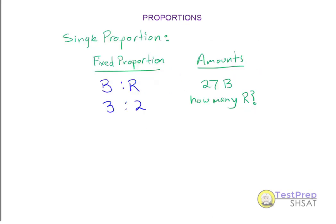Let's start with the fundamental case: the single proportion problem. This problem starts with a fixed ratio or proportion of things — blue to red is in a ratio of 3 to 2, for example. In addition, you're usually given the actual amount of one of the items, for example there are 27 blue items, or perhaps you're given a total. The objective is to use the fixed ratio and the amounts given to find the missing amounts of the other elements, or possibly the total.